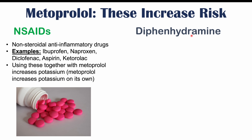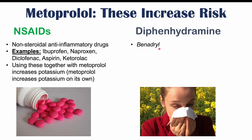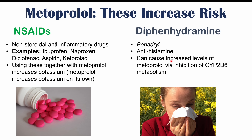Diphenhydramine, also known as Benadryl, is an antihistamine used to treat allergies. It can cause increased levels of metoprolol via inhibition of CYP2D6 metabolism — diphenhydramine inhibits this enzyme, preventing the breakdown of metoprolol, leading to higher metoprolol levels and increased side effects.